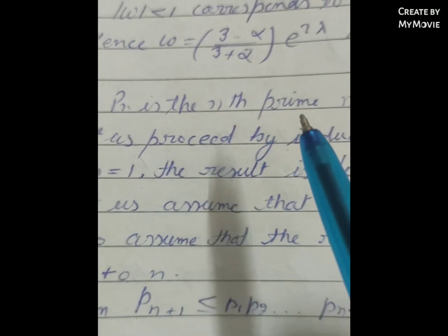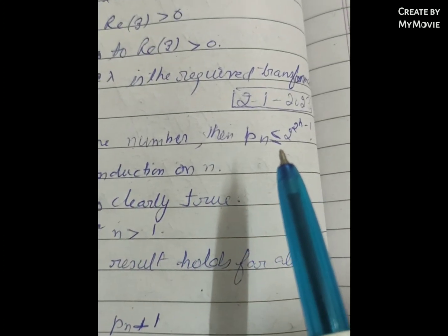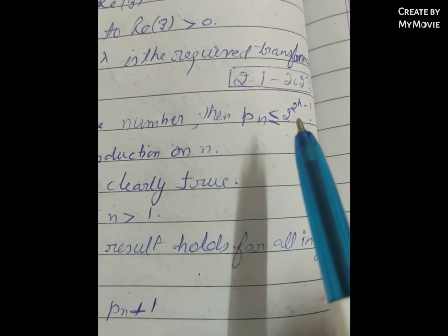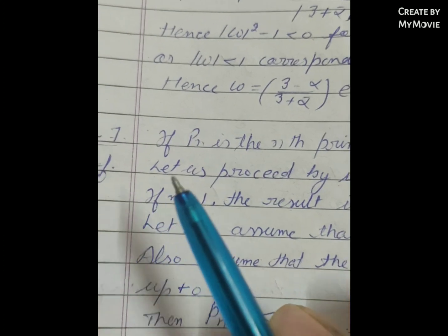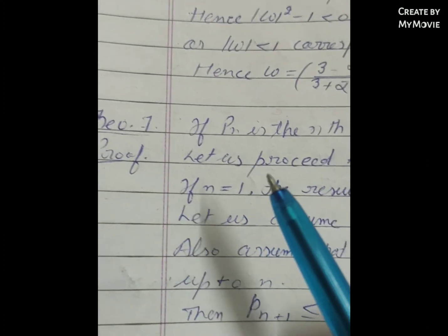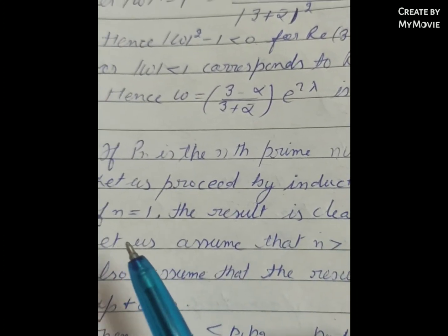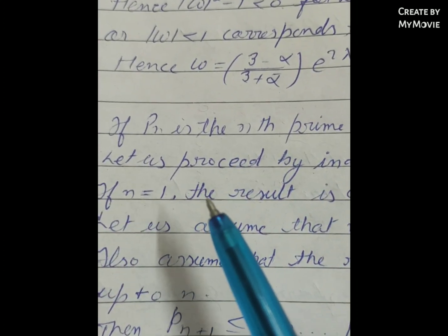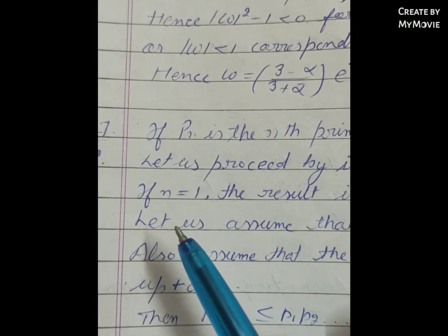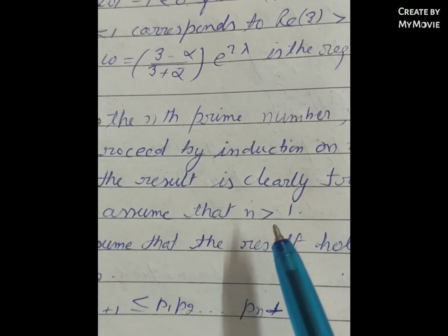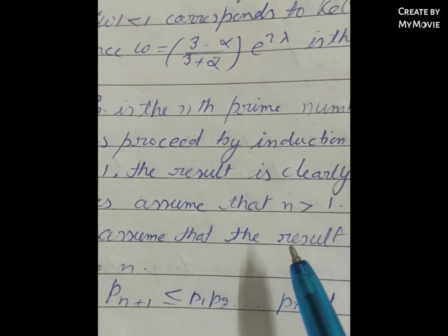If p(n) is the nth prime number, then p(n) ≤ 2^(2^(n-1)). We proceed by induction on n. If n = 1, then the result is clearly true. Now let us assume that n is greater than 1.